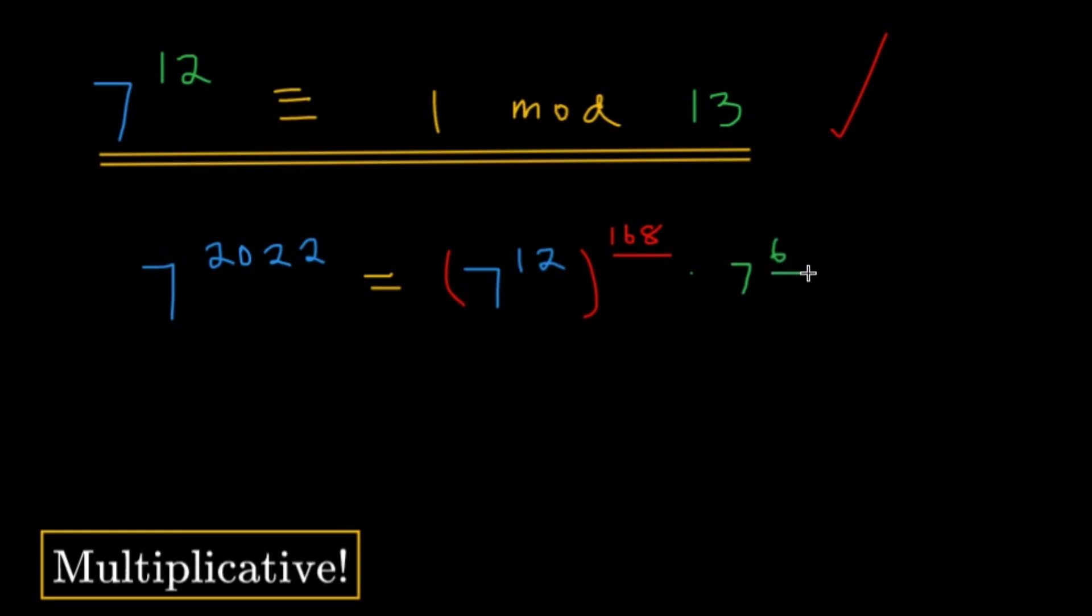So essentially, this is the quotient, and this is the remainder. So we can express 7 raised to 2022 into some power of 7 raised to 12, and then just the 7 raised to the remainder. So this is under mod 13. Now let's see what we can do here. Because we have 7 raised to 12 and 1, they're essentially just the same thing under mod 13. This is what this underlined congruence means. So 7 raised to 12, I can essentially replace it with a 1, because of the property in modulo.